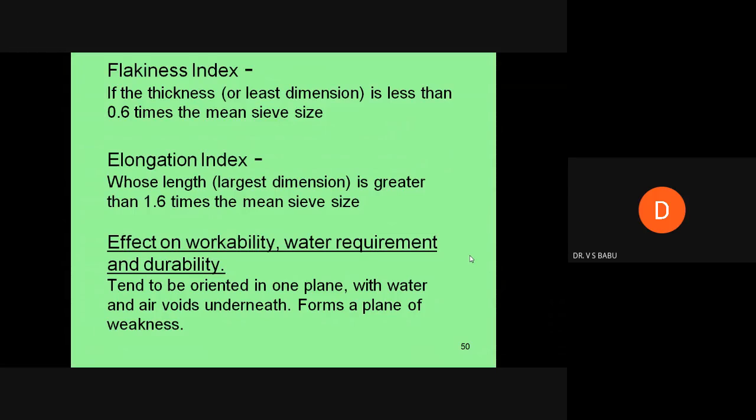Flaky material is like potato chips - very thin. Elongated material is like corn chips - lengthy like fingers. For example, if you have 13.5 mm passing and 10 mm retained, the average is 12.5 plus 10 divided by 2, multiplied by 1.6.